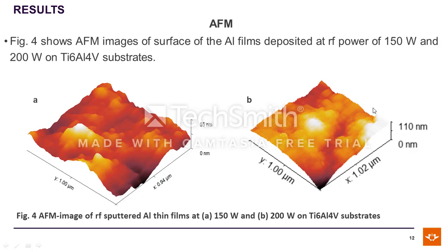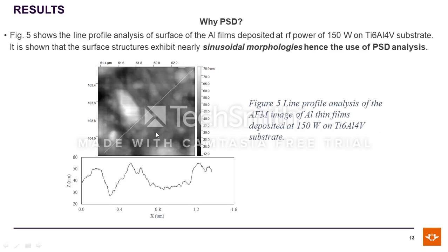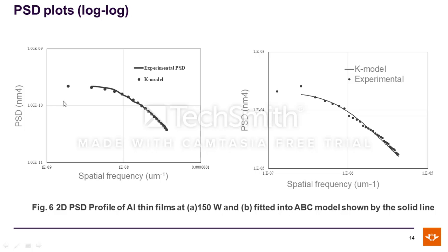In our case, we have two images of aluminum film deposited on a titanium Ti-6 substrate, and these are the 3D AFM images of those samples. We performed a section analysis to confirm that the profiles exhibit sinusoidal morphology, and hence we can use power spectral density for analysis. When subjected to the MATLAB code, we get these profiles — the continuous decline is experimental, and the k-model gives a perfect PSD fit in both cases.